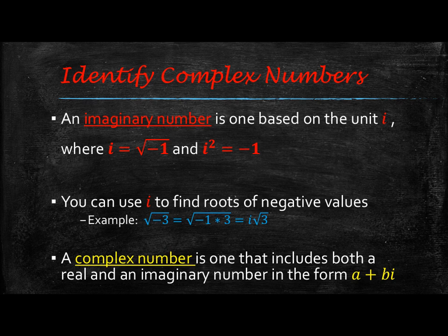What you're going to see now is that we have real numbers, but then we also have what's called imaginary numbers. The definition of an imaginary number is one based on the unit i. Now, we've always told you up to this point that you can't take the square root of a negative — well, you can take the square root of a negative, it's just that up to this point we've only been looking at real numbers.